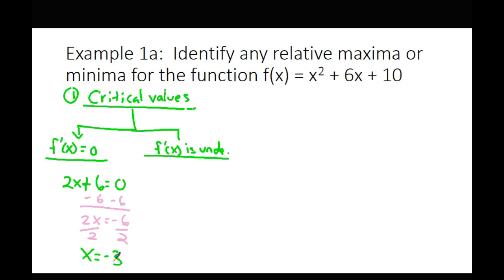Next, we find where the derivative is undefined. Where is 2x plus 6 undefined? Nowhere — it's a polynomial, so we only have one critical value: x equals negative 3. Now we need to look at the slopes to the left and to the right of that point. If the slope goes from positive to negative, it's a max; if it goes from negative to positive, it's a min.